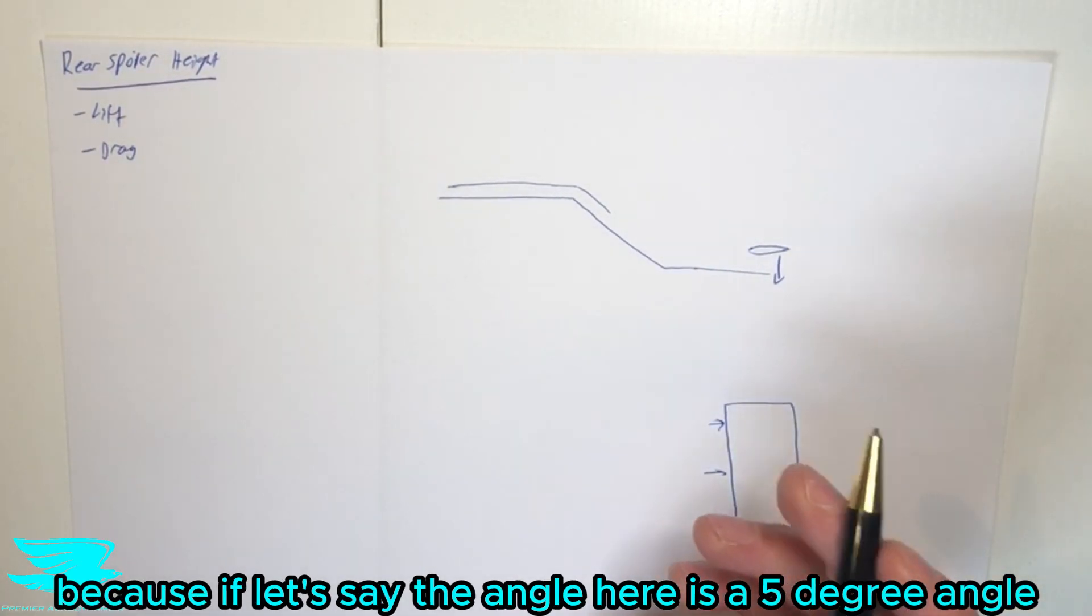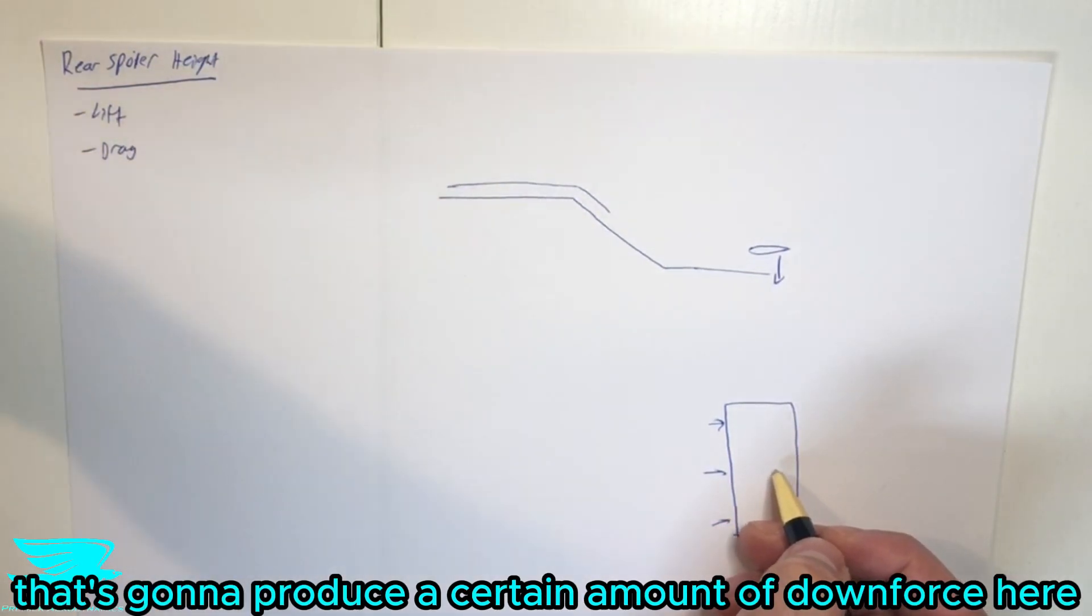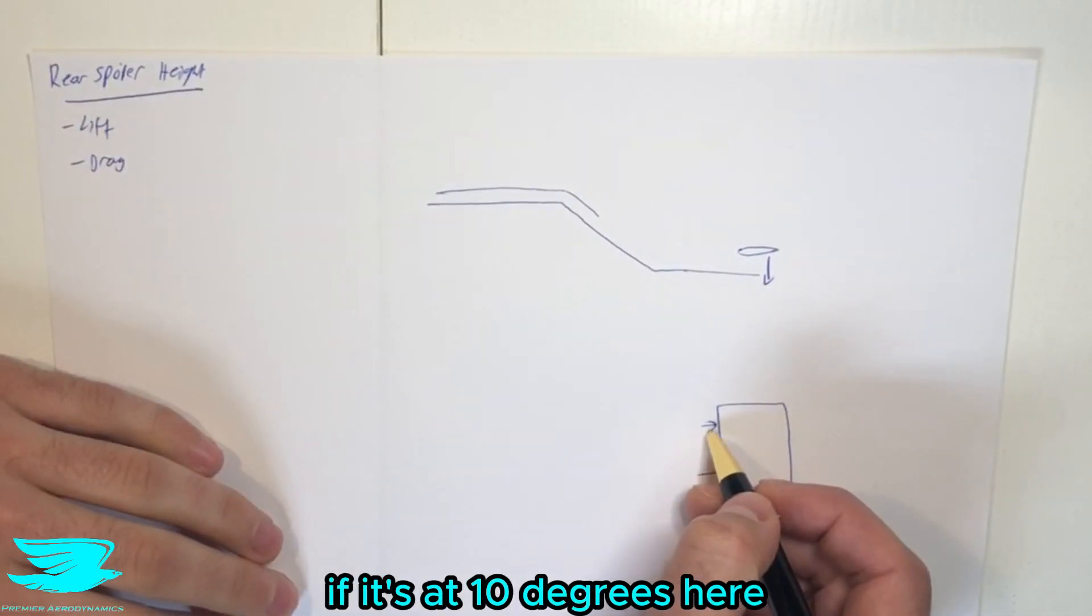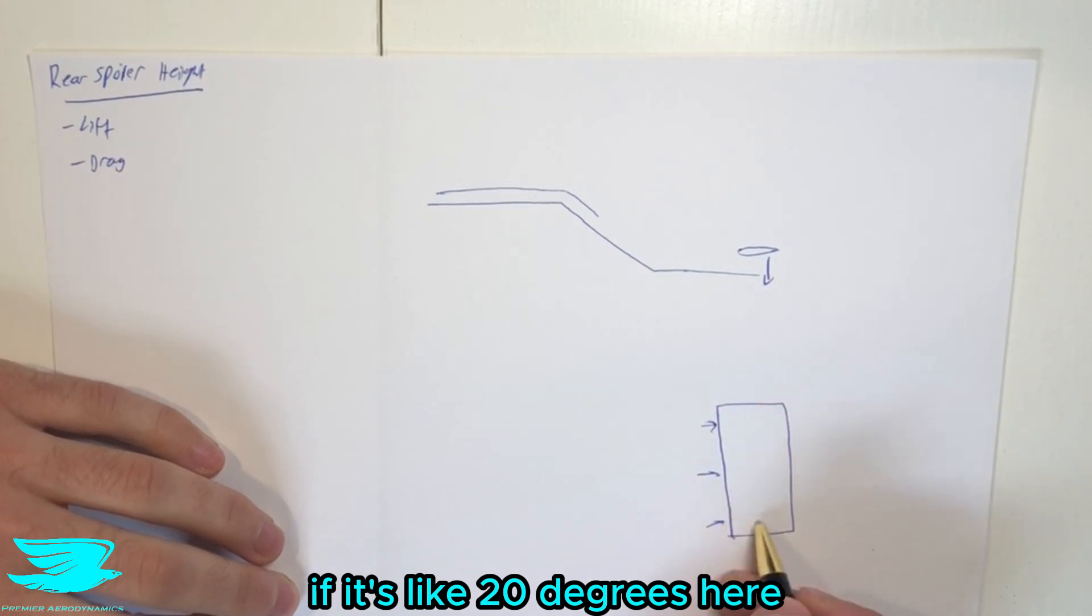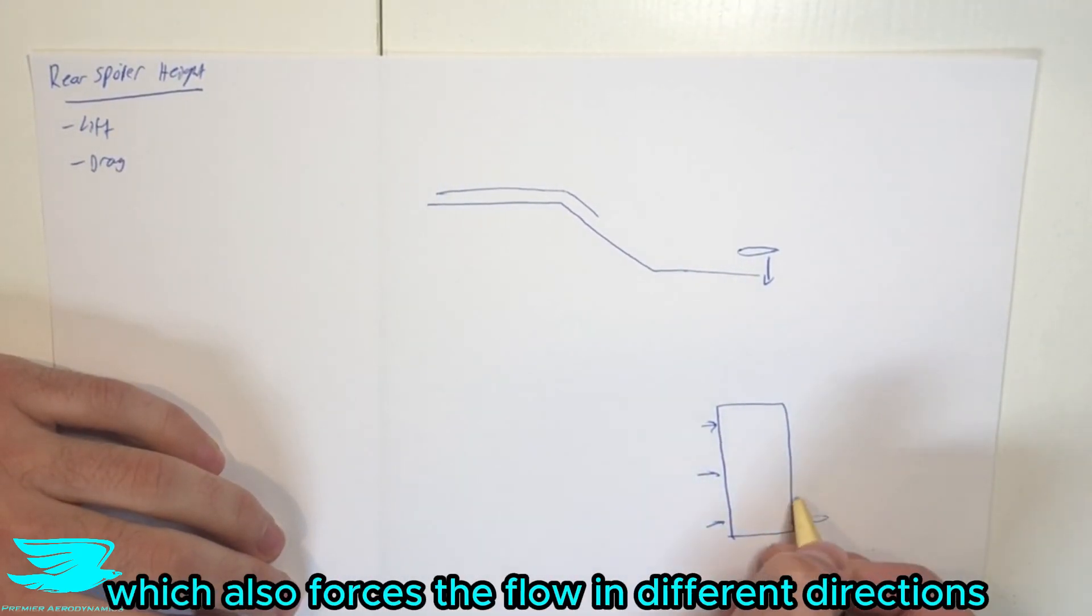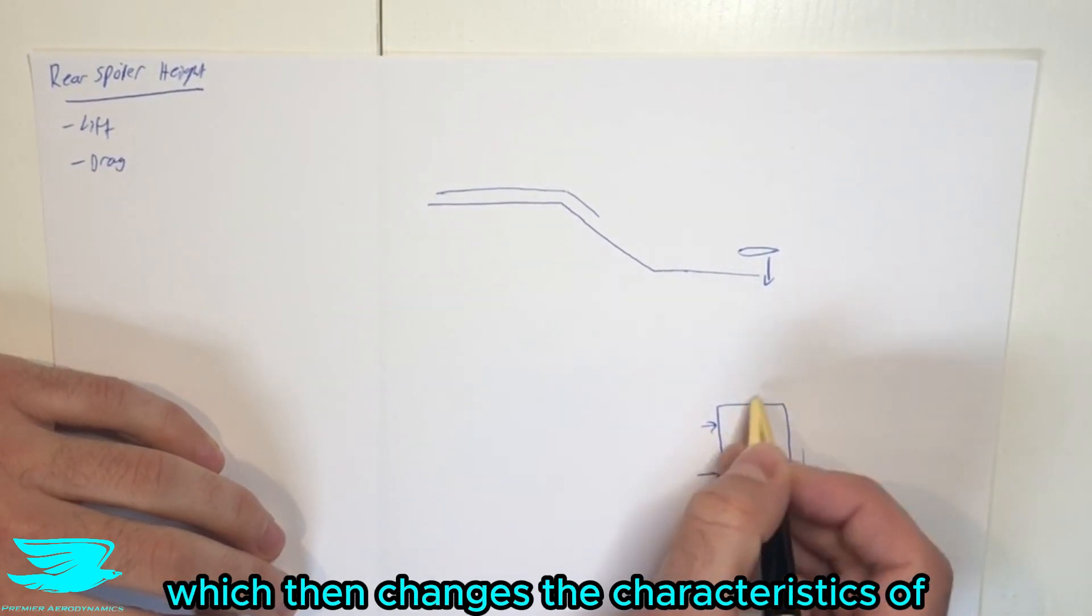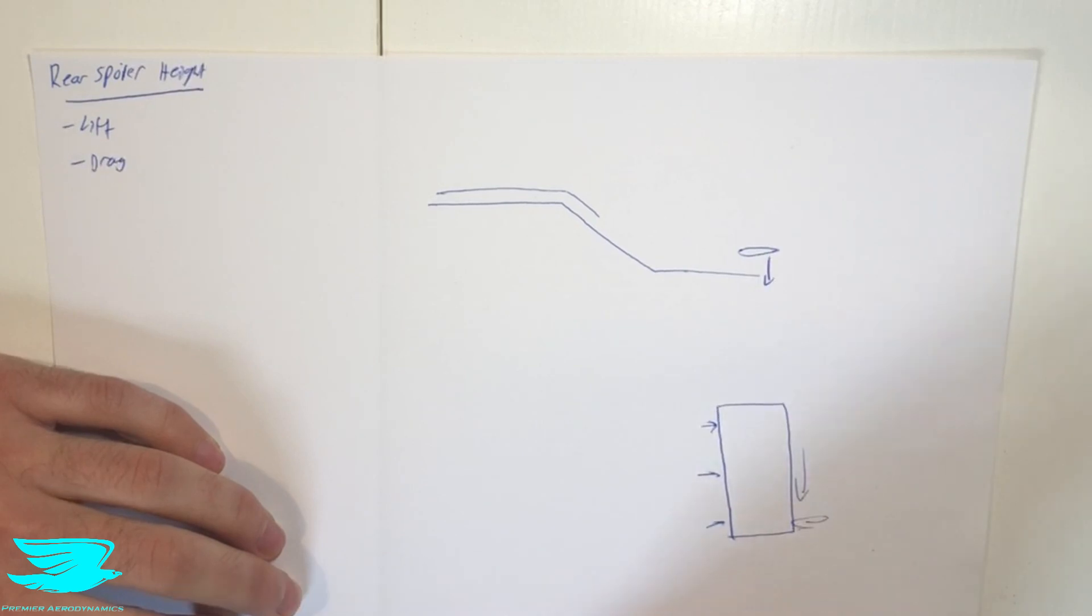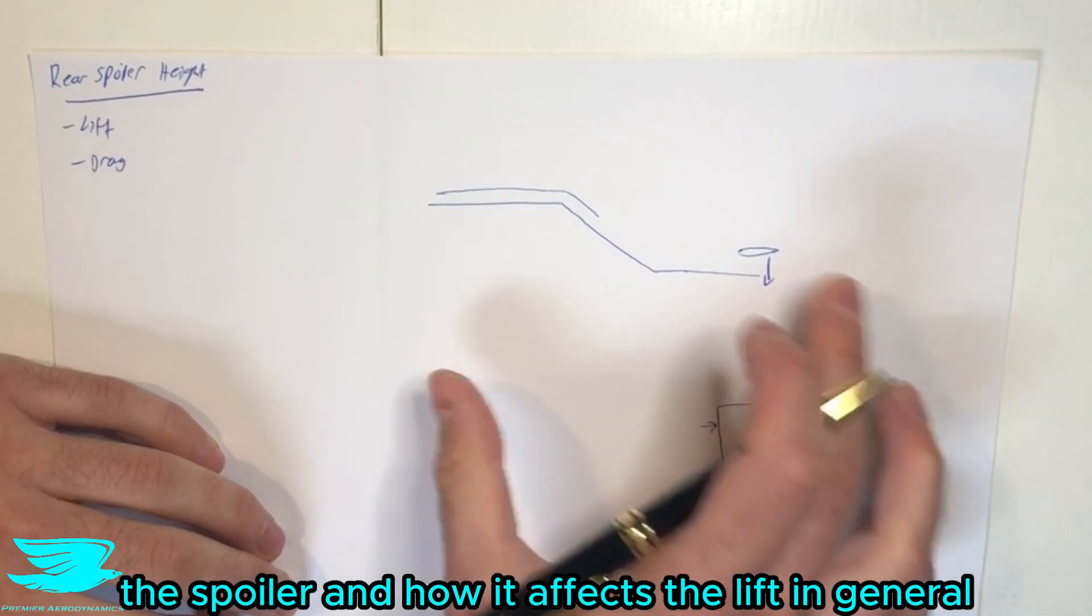Because if let's say the angle here is a five degree angle of attack, well that's going to produce a certain amount of downforce here. If it's at 10 degrees here, it's going to produce a different amount. If it's like 20 degrees here, that might even result in stalling. So now we get a bigger wake around this region, which then also forces the flow in different directions, which then changes the characteristics of this spoiler and how it affects the lift in general.